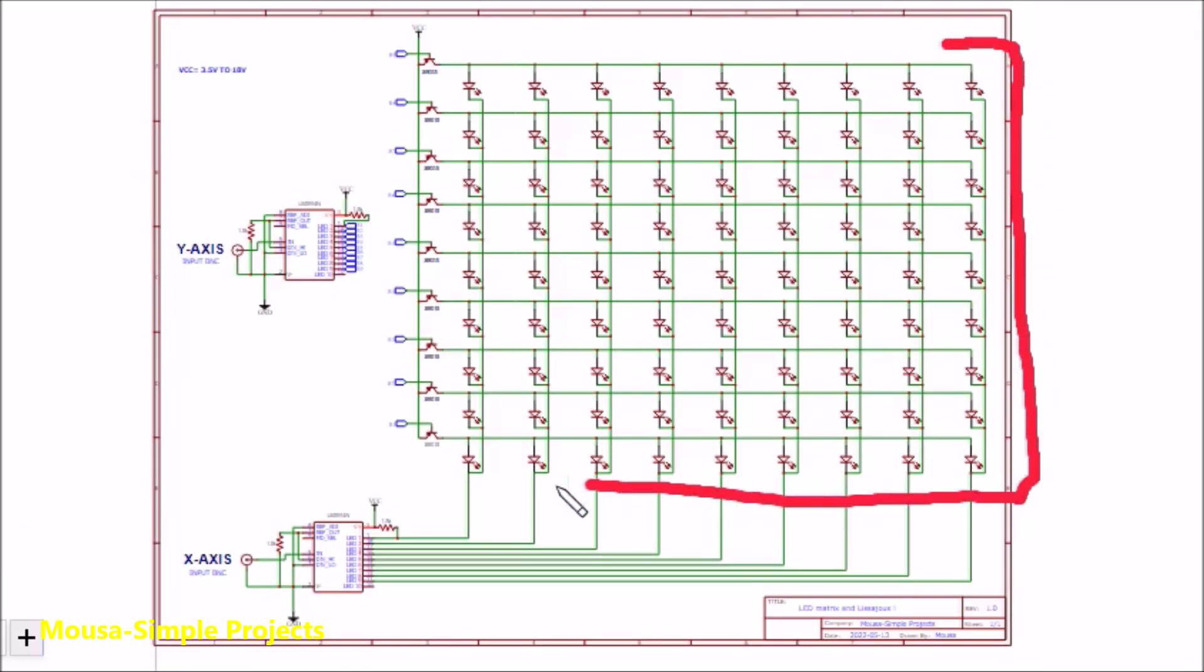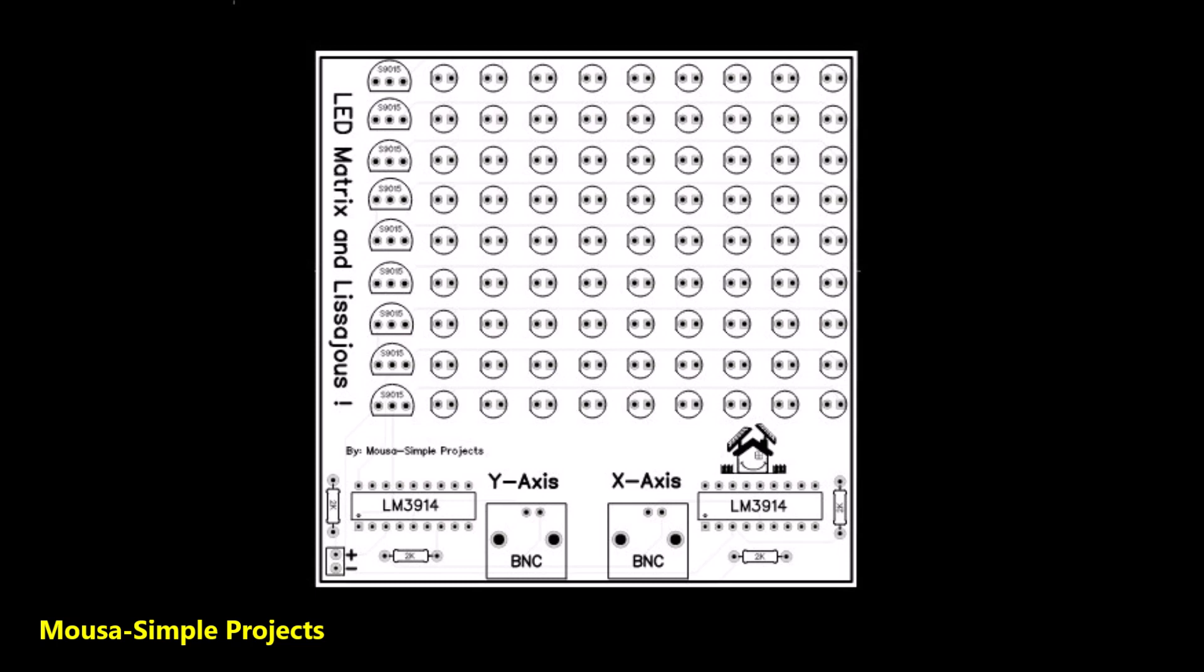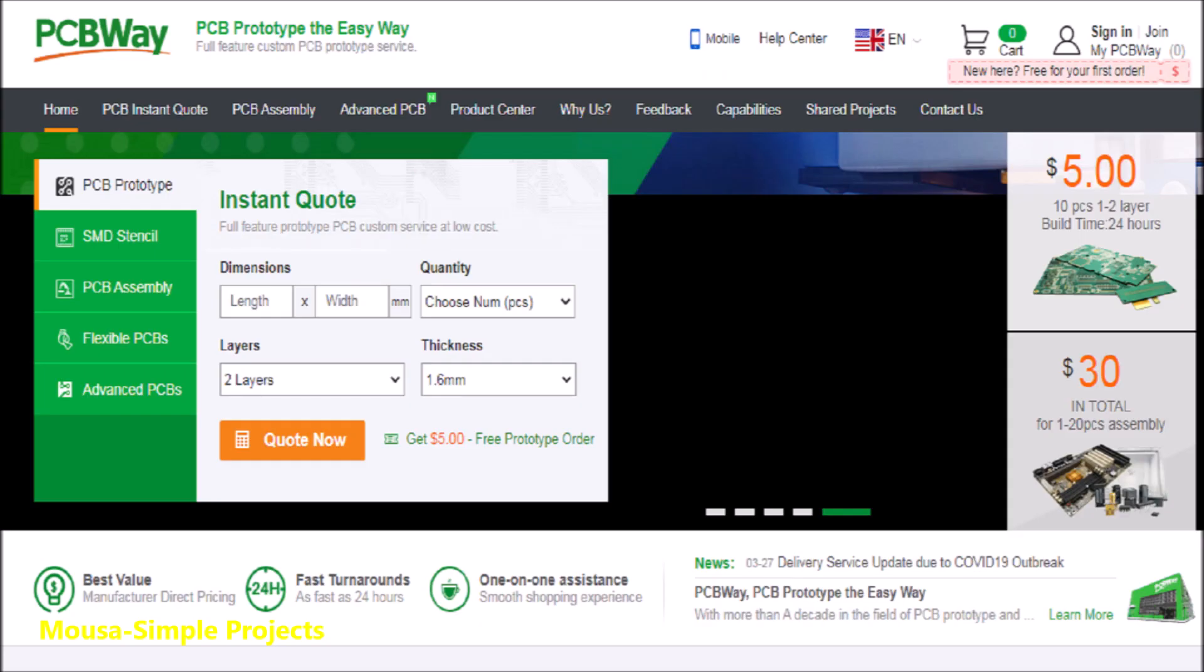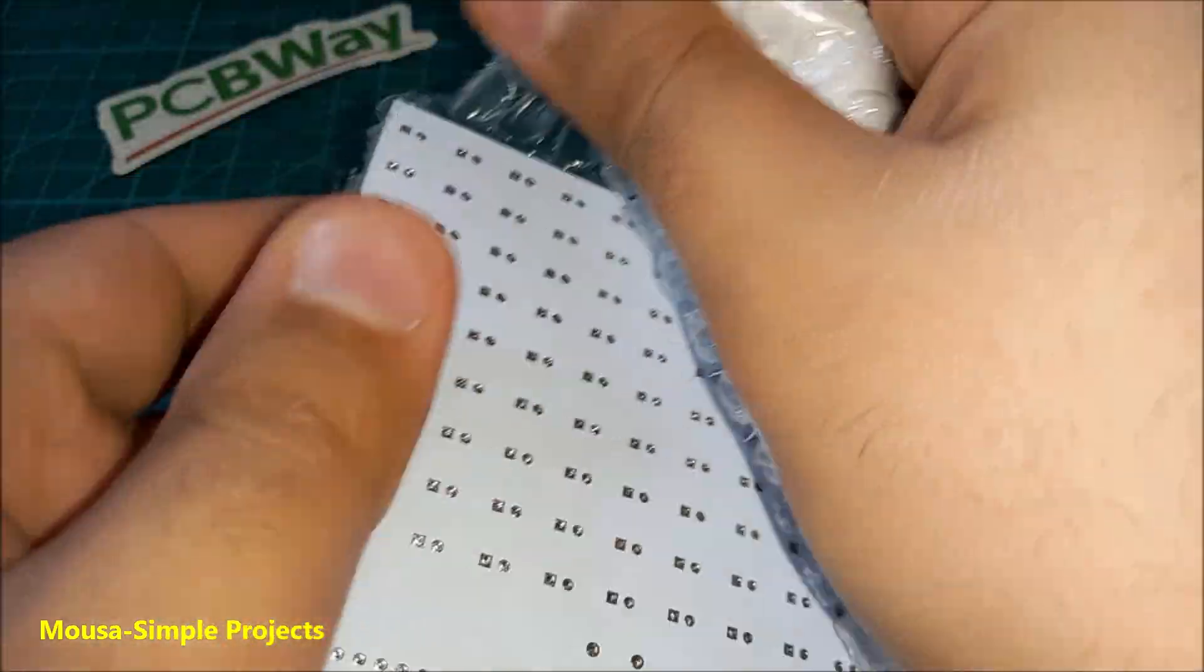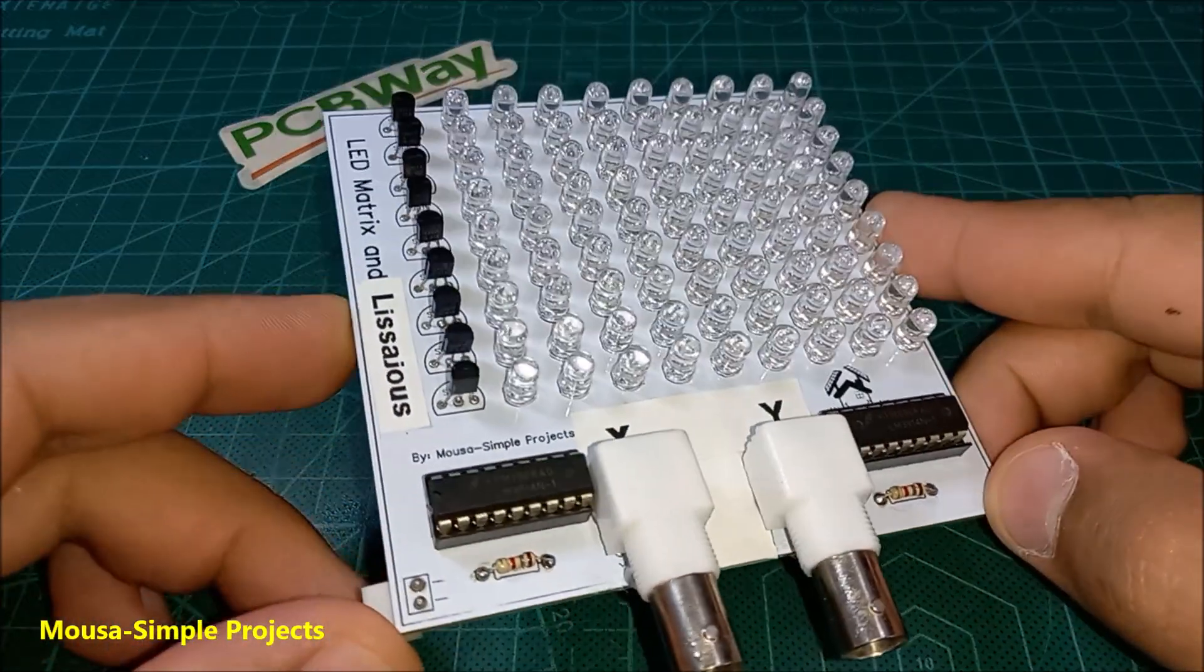By the way, you can use 100 LEDs instead of 81. I turned this circuit into a PCB and ordered it from PCBWay.com. After 10 days, I received my package, then I soldered the components on the PCB.